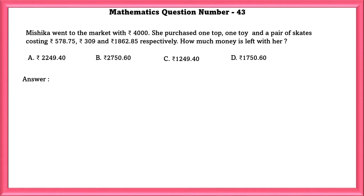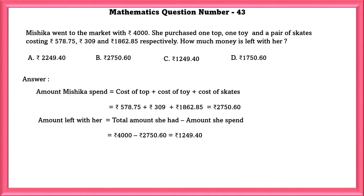Mathematics question number 43. Mishika went to the market with 4,000 rupees. She purchased a top, one toy and a pair of skates costing 578.75 paisa, 309 rupees, 1,862.85 paisa respectively. How much money is left with her? Amount Mishika spent is equal to 2750.6. Amount left with her is equal to total money she had minus amount she spent which is equal to 1249.40.